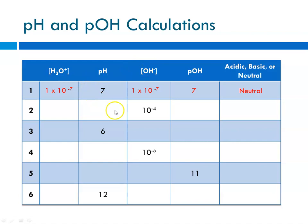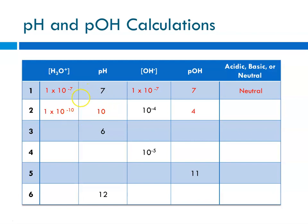Question 2 gives us a hydroxide ion concentration of 10 to the minus 4. That means the pOH is minus the log of 10 to the minus 4, which is 4. If we know the pOH is 4, then the pH is 10. The hydronium ion concentration is 10 to the minus pH, so 10 to the minus 10. pH is 10, which is greater than 7 — it's basic.